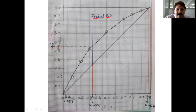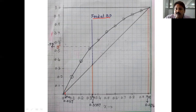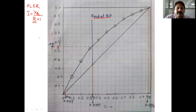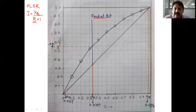For the enriching section operating line, any line drawn from the xD point on the diagonal represents that operating line. For the stripping section operating line, lines are drawn from the xW point. The y-intercept of the enriching section operating line equals xD / (R + 1), where R is the reflux ratio. If R is not given directly, it must be calculated from the graph.